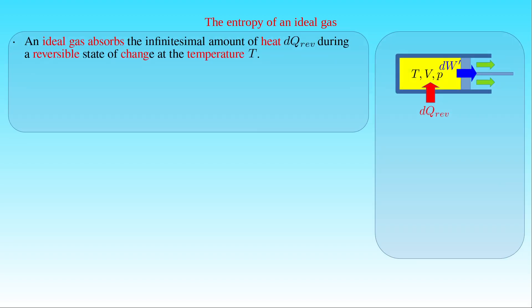If a given amount of ideal gas absorbs the infinitesimal amount of heat dq_rev at the temperature T in a reversible change of state, then we can apply the first law of thermodynamics telling us that the differential of the internal energy U of the gas is equal to dq_rev minus the infinitesimal amount of work dW' done by the expanding gas. Here the work dW' is simply equal to the pressure-volume work given by the pressure P of the gas times the infinitesimal change in its volume V.